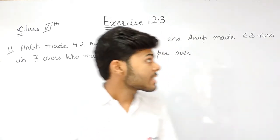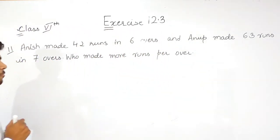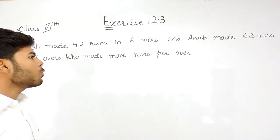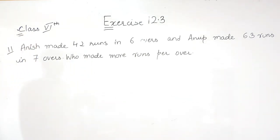Hello everyone, this is the last question of exercise 12.3 of chapter ratio and proportion. The question says that Anish made 42 runs in 6 overs and Anup made 63 runs in 7 overs. We have to tell who made more runs per over.